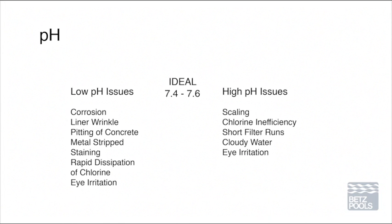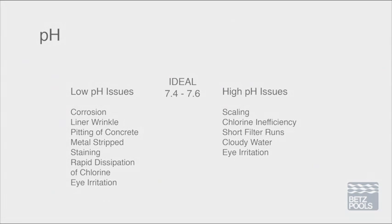Let's start by looking at pH. pH is the value expressing the relative acidity of pool or spa water. The ideal range for pools is 7.4 to 7.6, and 7.2 to 7.8 for spas. The effects of low pH are corrosion of pool surfaces and equipment, skin discomfort, eye irritation, and low effectiveness of chlorine. The effects of high pH are scale and cloudy water, and it also decreases the effectiveness of chlorine. We will discuss how pH affects chlorine in greater detail when we cover sanitizers.